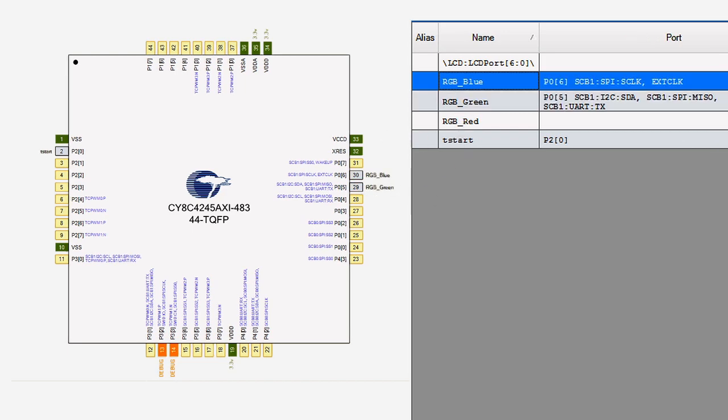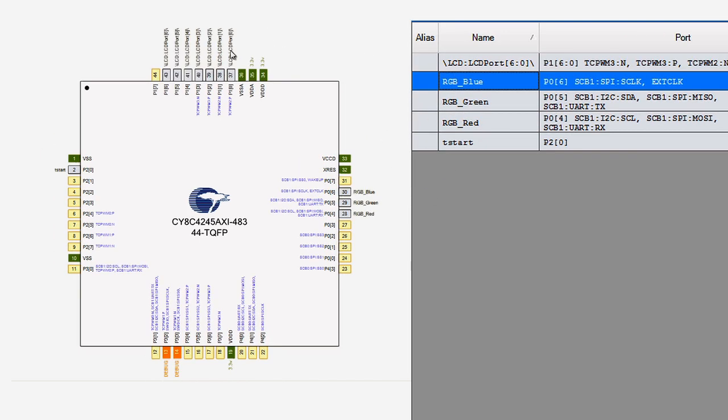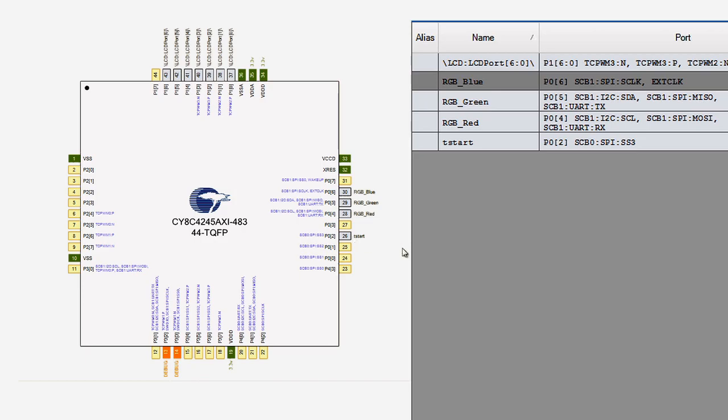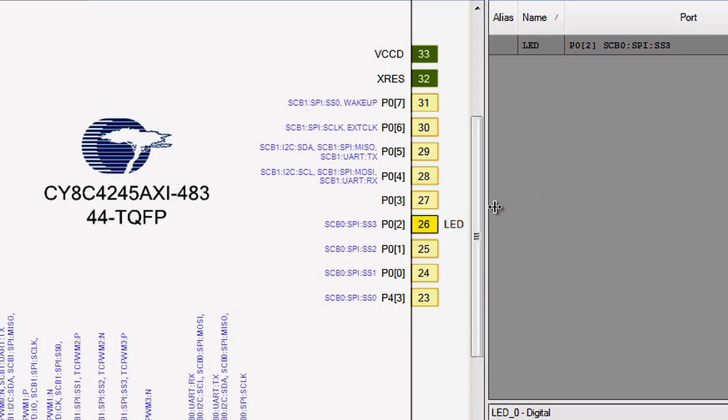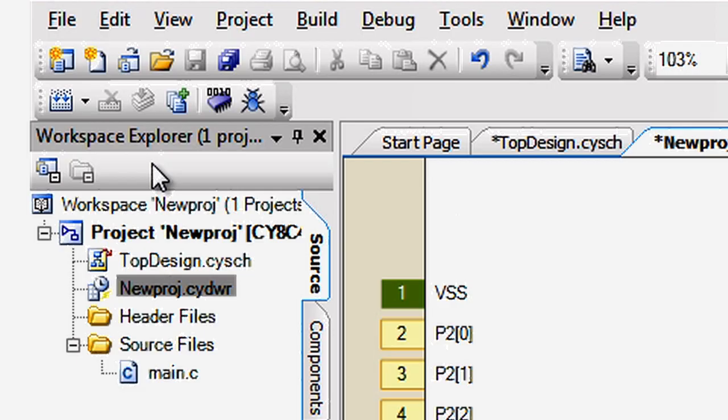First, you can choose to connect the pin to just about any other pin or IP block in the device. Some micros restrict the connectivity of on-chip functions like PWMs to specific pins. That can mean a re-spin when the board comes back with the LED on the wrong pin. But PSOC devices have plenty of internal routing that allow you significant flexibility. You can fix board problems with a simple rebuild of the project.